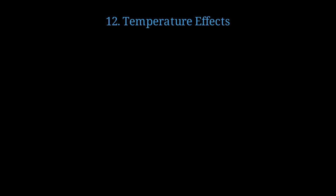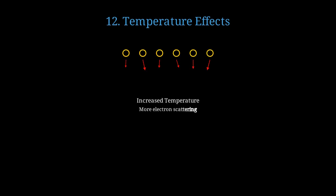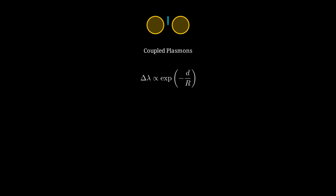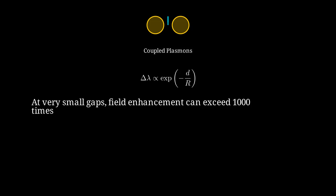Temperature also affects plasmonic properties in interesting ways. As temperature increases, electrons scatter more frequently with the lattice, increasing damping and broadening the resonance peak. The damping rate increases approximately linearly with temperature as gamma of T equals gamma naught plus alpha T. When nanoparticles get close together, something fascinating happens: their plasmons couple. When two nanoparticles are brought close together, their electric fields overlap and couple, creating new hybrid plasmon modes. The wavelength shift delta lambda is proportional to exponential of negative D over R, where D is the separation and R is the particle radius, showing the coupling decays exponentially with distance. At very small gaps of just a few nanometers, the field enhancement in the gap can exceed 1,000 times, creating hot spots for spectroscopy.